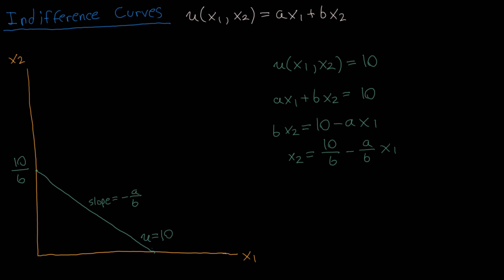We can also recover the horizontal intercept by setting x2 equal to 0 and solving for x1. We get 0 equals 10 over b minus a over b times x1, so x1 equals 10 over b times b over a. The b's cancel, leaving 10 over a — that is the horizontal intercept.